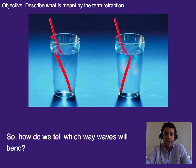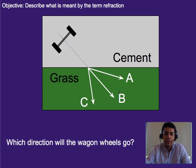So that leads us to this question of how do we tell which way waves will bend? Well I like to use a wagon wheel analogy. And so what I'd like you to do is pause this real fast and think to yourself which way will the wagon wheels go if we have them rolling towards this grass and they hit the grass. Will they follow path A, path B, or path C? Take a second to think about it.